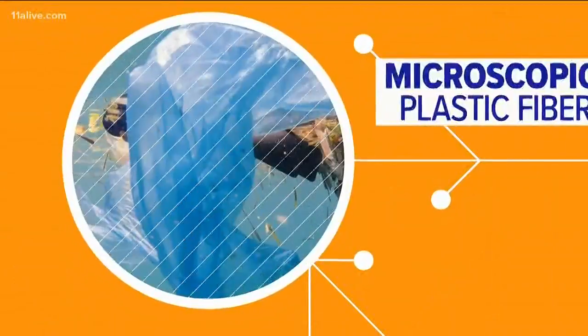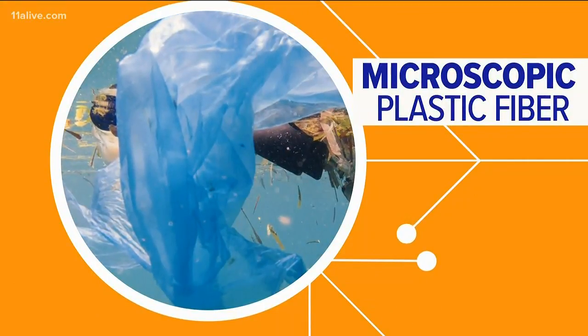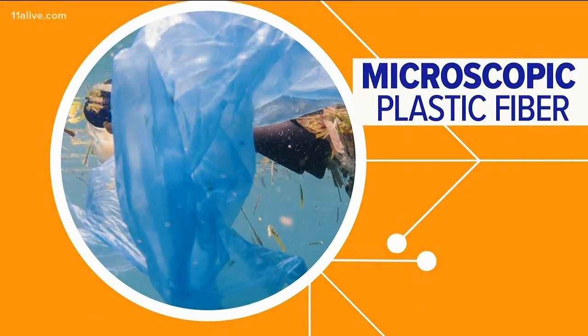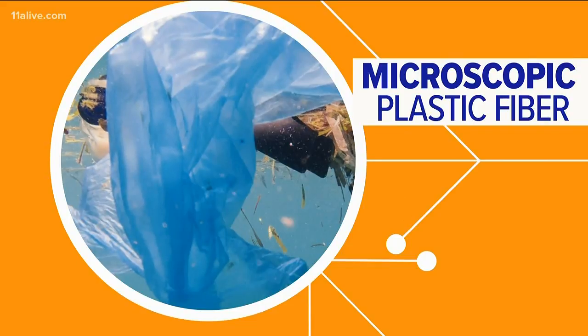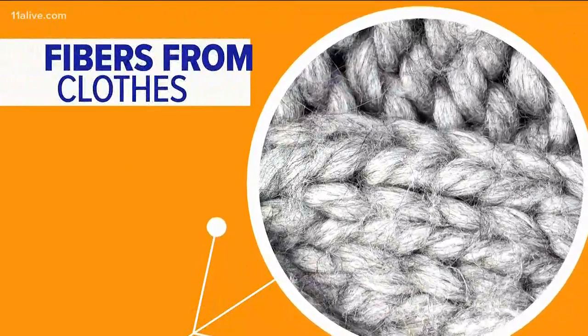Researchers at Penn State University report that while plastic items found floating along our waterways are harmful, there are also microscopic plastic fibers that pollute oceans and streams. Those fibers are in our clothes and wash into our waterways as a result of laundry.